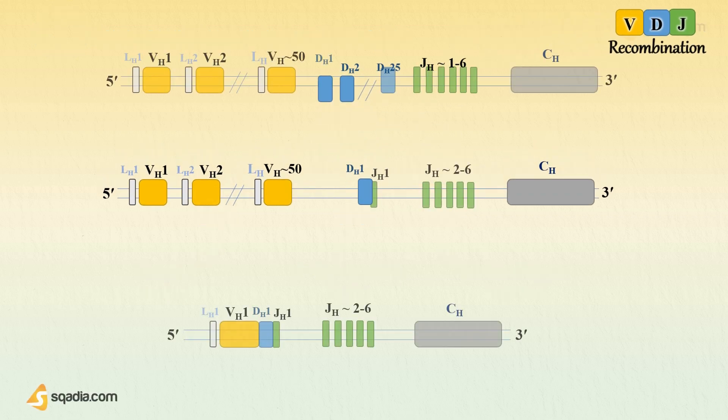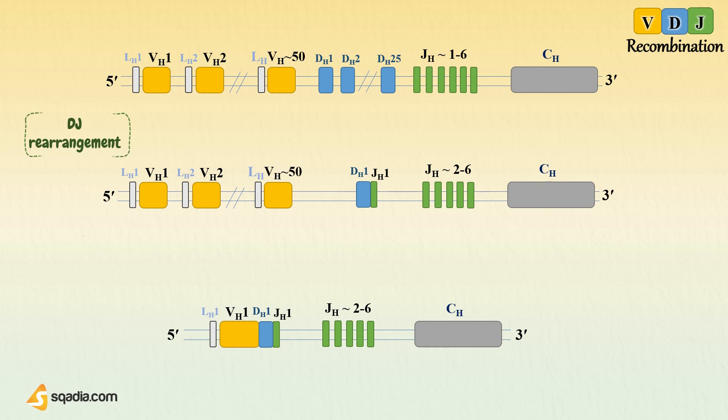During VDJ recombination, in the first step, DJ rearrangement occurs, where one of the D segments recombines with one of the J segments. For example, D1 combines with J1, with the intervening DNA from D1 to J1 being looped and cut out.